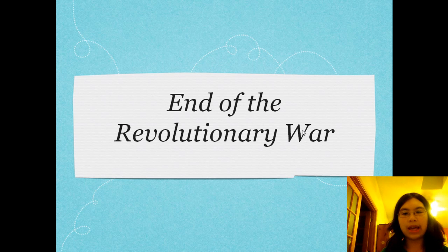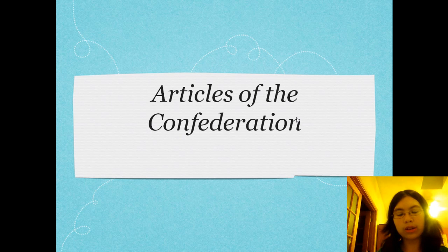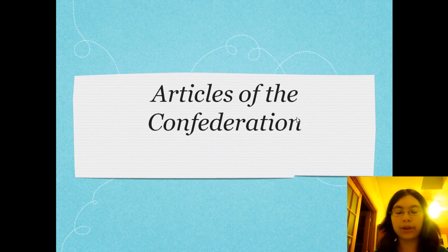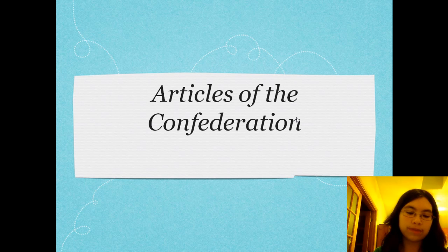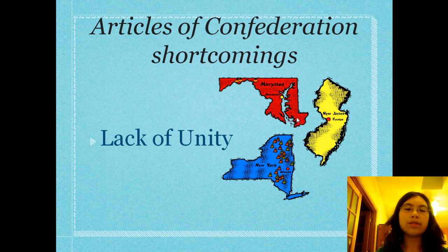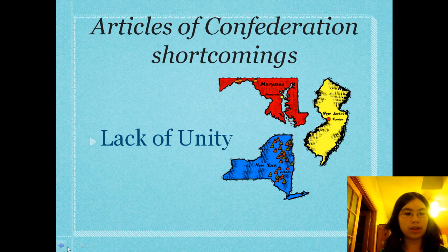We start our story with the end of the Revolutionary War — newsflash, we did win. We managed to get through the war with enough organization using a document called the Articles of Confederation. The Articles of Confederation basically stated that the states were banded together, that they were a confederation, and laid out some of the things the government could do. But the problem was, the Articles of Confederation sort of sucked. They had a lot of shortcomings.